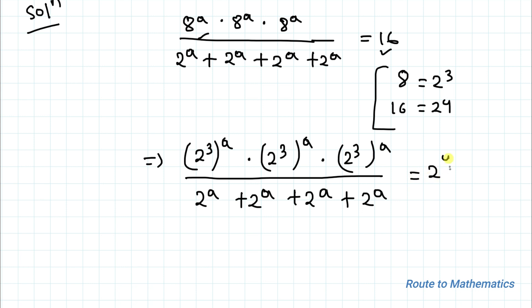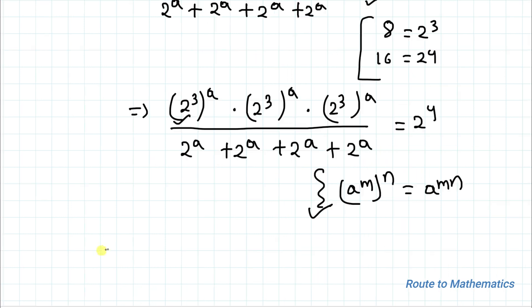We know the exponential rule: a to the power m, whole to the power n, equals a to the power mn. Applying this rule, we can write: 2 to the power 3a, multiplied with 2 to the power 3a, multiplied with 2 to the power 3a.